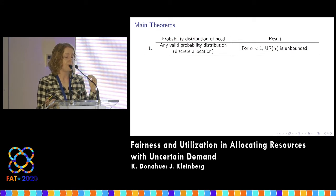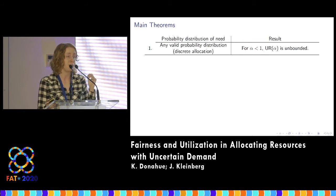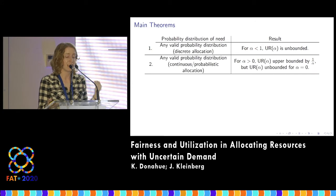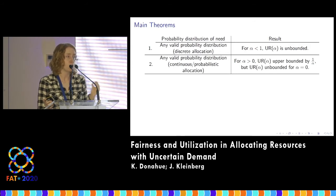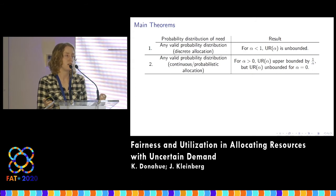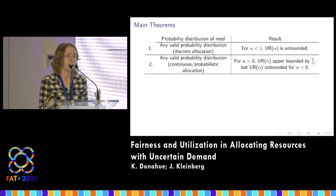In the first case, looking over any probability distribution of need with a discrete allocation of resources — one generator, two generators, three generators — we find the utilization ratio can be unbounded; you could have arbitrarily high trade-offs for certain distributions. We then considered relaxing this to allow fractional or probabilistic allocations, like 1.3 generators in one town. This helps for a fairness constraint greater than zero — the utilization ratio is upper bounded by one over alpha. However, if you require perfect fairness, the utilization ratio can still be unbounded.